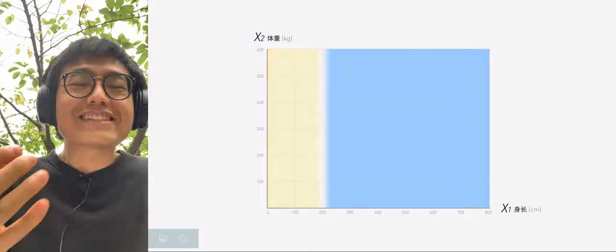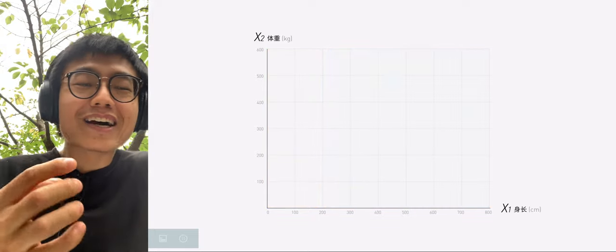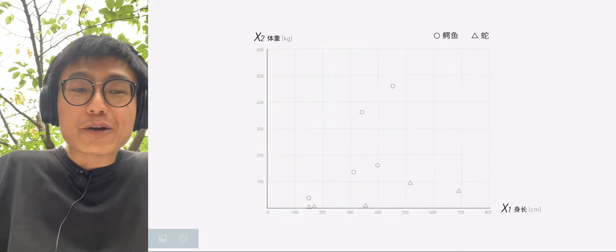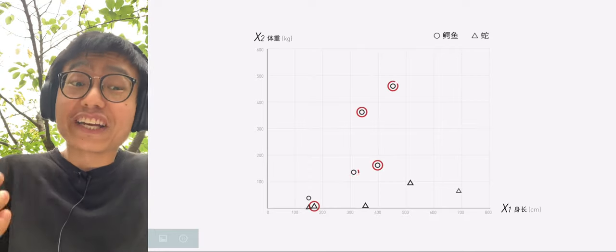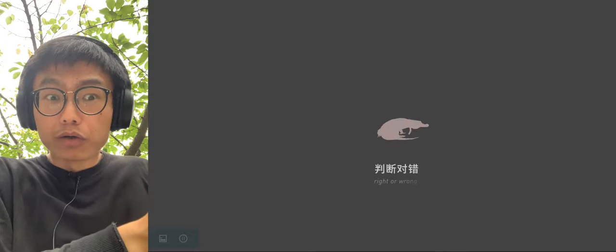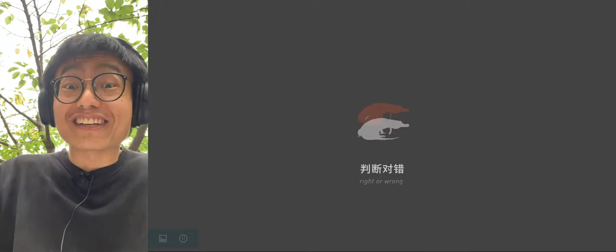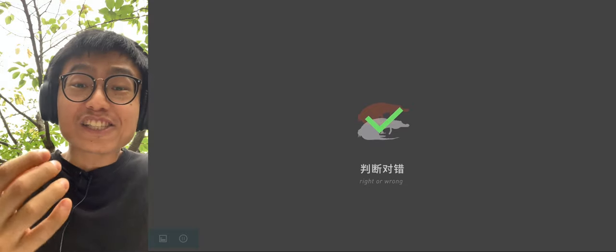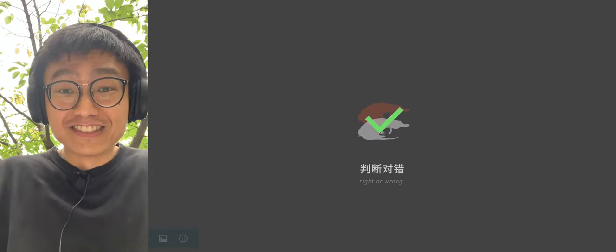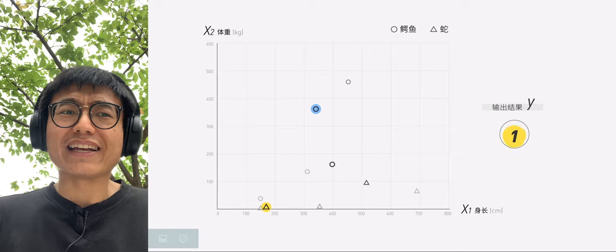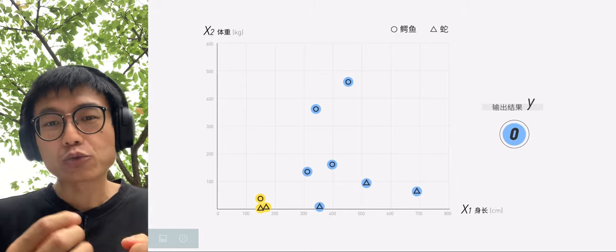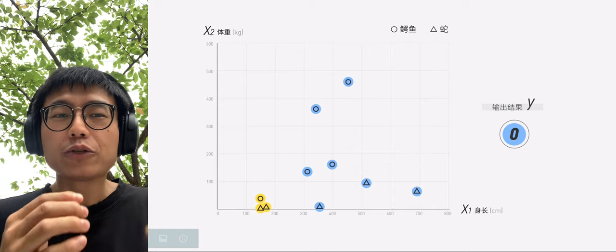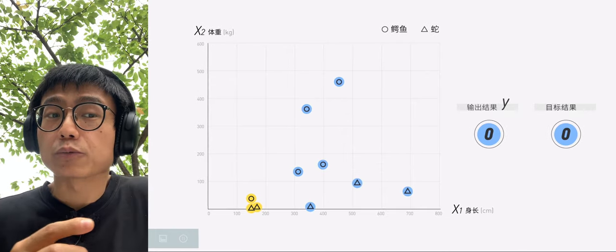Our machine can't read the line, and it doesn't know that yellow is the crocodile's area and blue is the snake's area. But by calculating each point, the machine can know that the six points are wrong. Why? This is the core part of getting neurons to start learning. Judging right or wrong, the result we output is lowercase y.